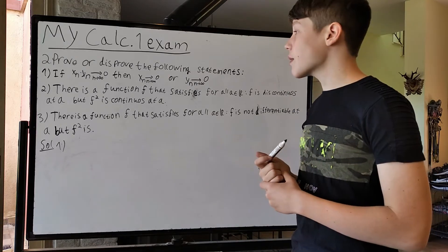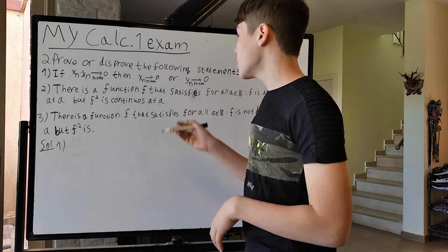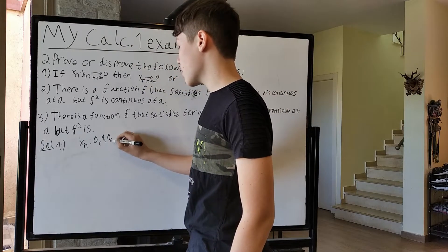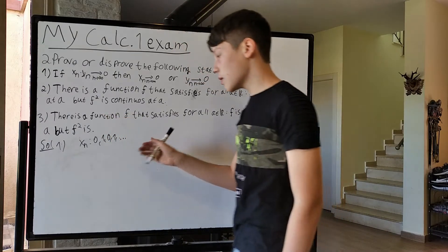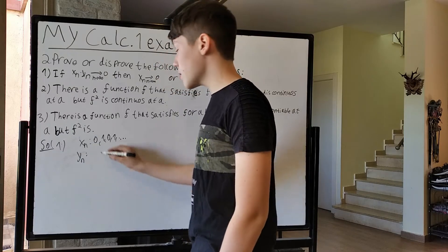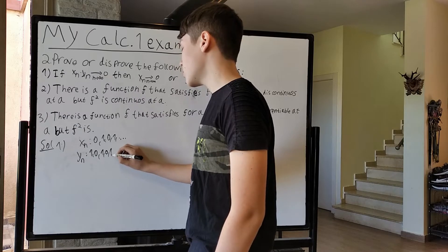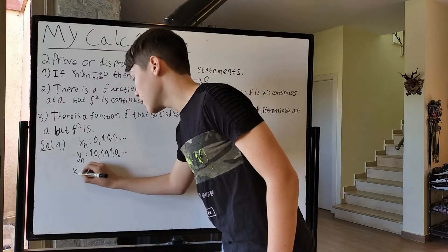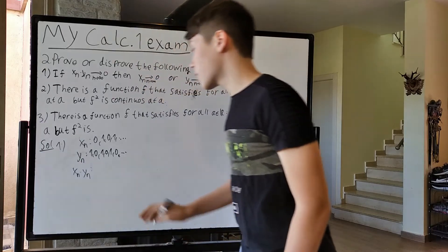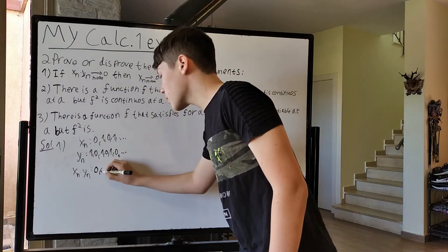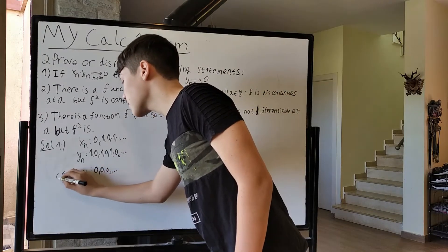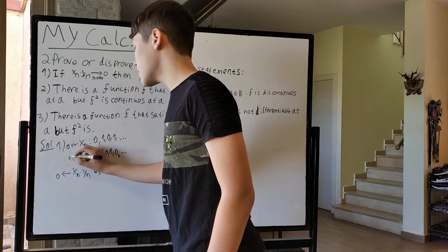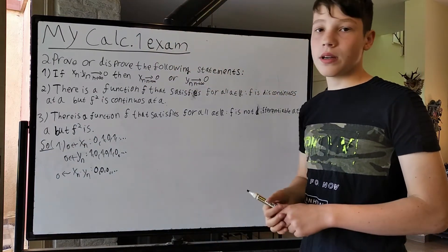The first one is incorrect, and let's show an example. Let's pick x_n to be the series 0, 1, 0, 1, ... alternating between 0 and 1. Let's pick y_n to be 1, 0, 1, 0, ... and so on. As you can see, the product x_n · y_n will result in 0 × 1, 1 × 0, 0 × 1 — so every term will be 0, obviously tending to 0. But these series obviously don't tend to any number; neither tends to 0. So we found our counterexample.